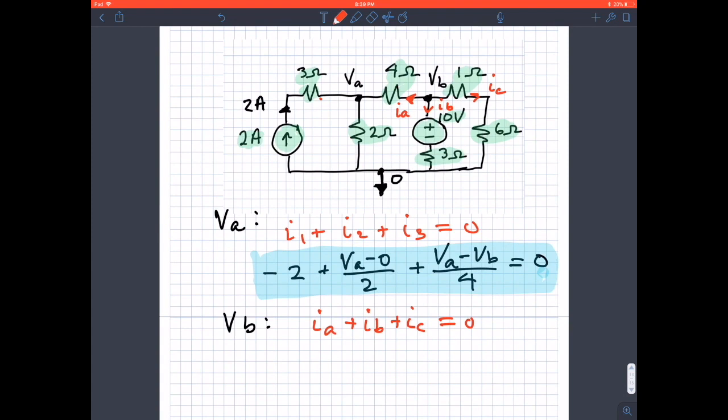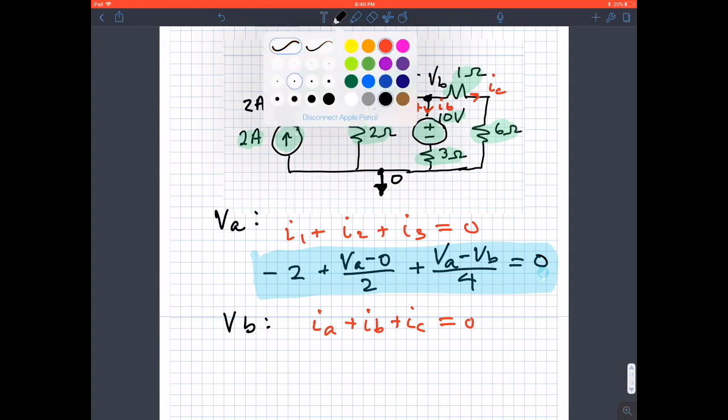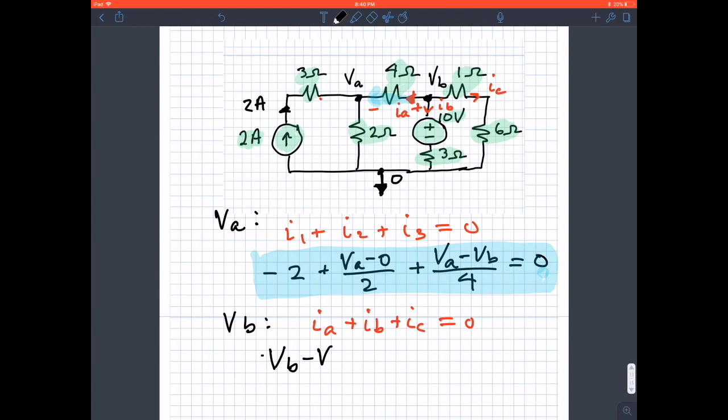If I reference the current IA in this direction, flowing this way, that means I'm assuming that the plus is here and the minus is here. To get IA, it would be VB minus VA divided by four. That's IA.